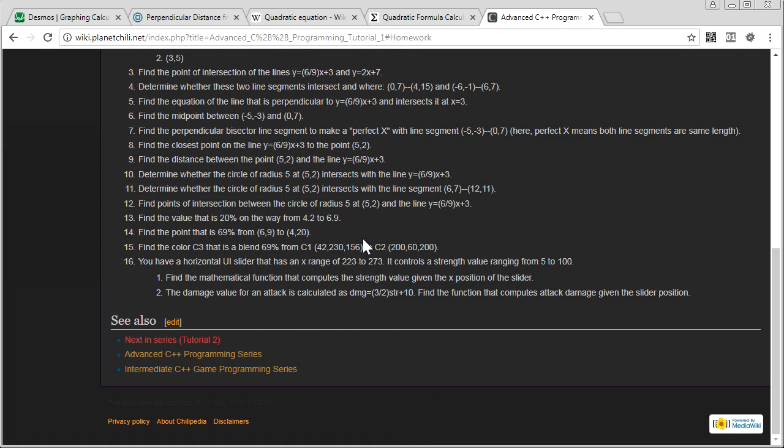Next question. All right, finally, the final question. And this one is also a linear interpolation, but it's a little bit of a word problem, a little bit of a practical situation here, how you might apply this in a real program. So, what we have got here is we've got a UI slider. You know, you all know what these things look like, right? I don't have to show you a slider. And it controls some value that has a range from 5 to 100. And the slider has a position on the screen that can range from 223 to 273. So, how do we do this?